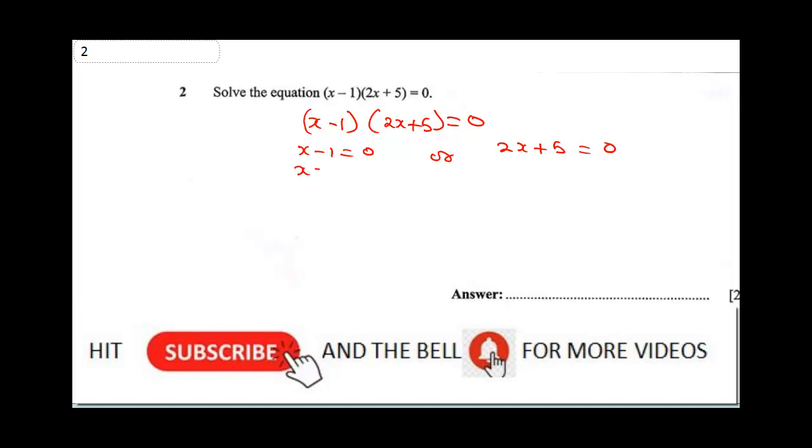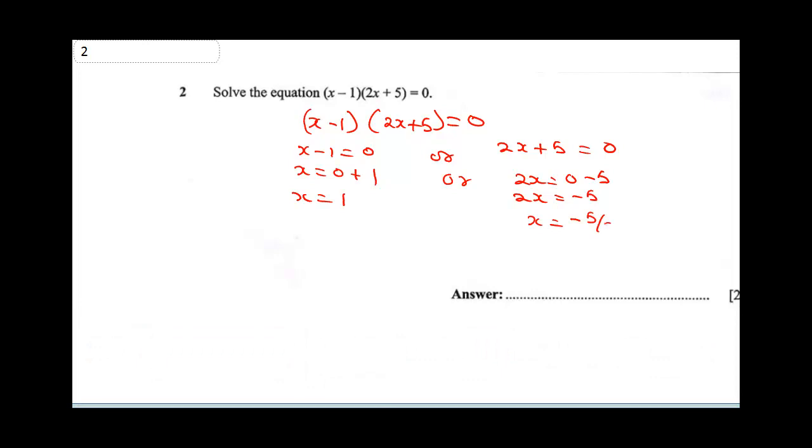Collecting like terms, x would be equal to 0 + 1, so x = 1. Or you say 2x = 0 - 5, so 2x = -5 and x = -5/2. Therefore our final answer would be x = 1 or x = -5/2.